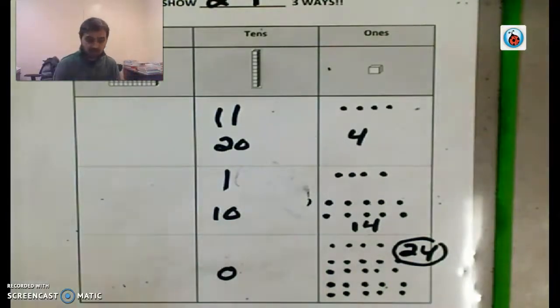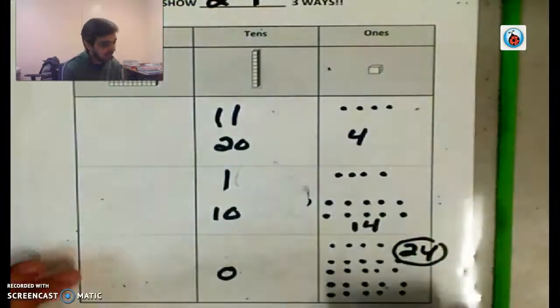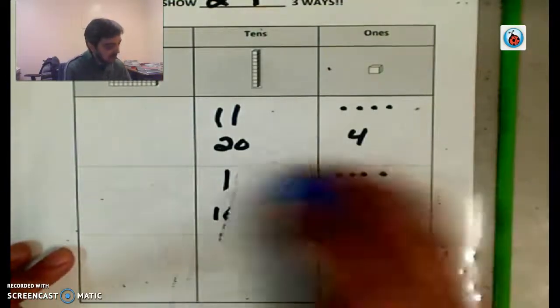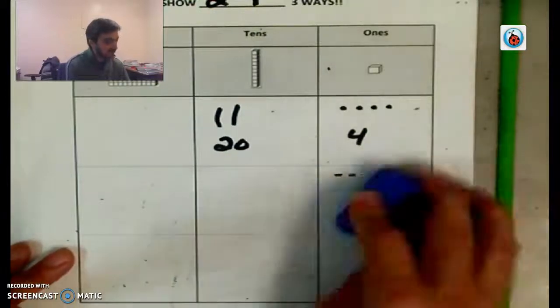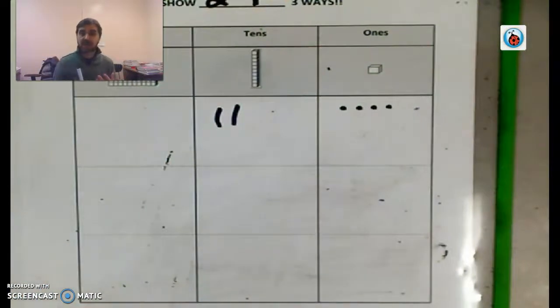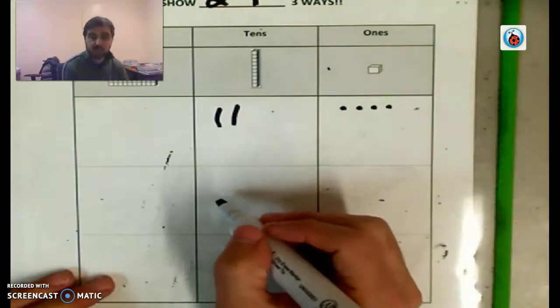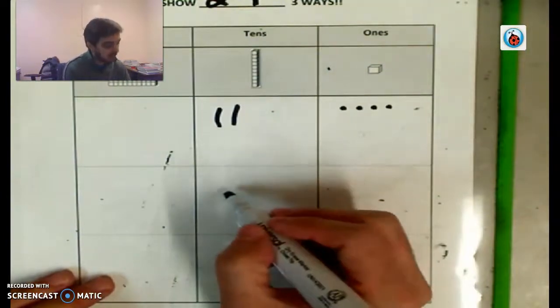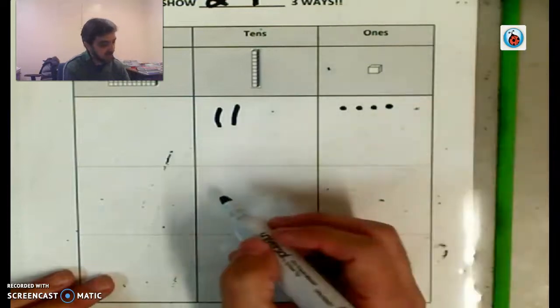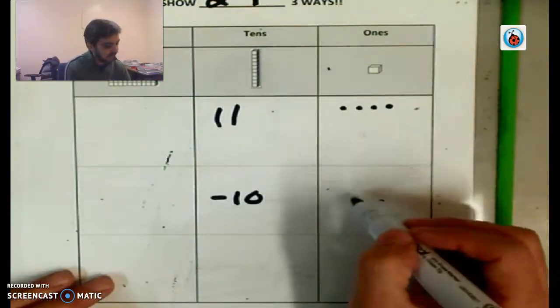All right. So I hope you get the idea of this. This is designed to really help you with subtraction. Because once again, if I had the number, I'm going to erase this real quick. If I had the number 24, so I've got 24 right here. I've got 24 M&M's. And I want to give my friend, let's say we're going to split them. So I'm going to give him, I'm not going to split them, but I'm going to give him a bunch.